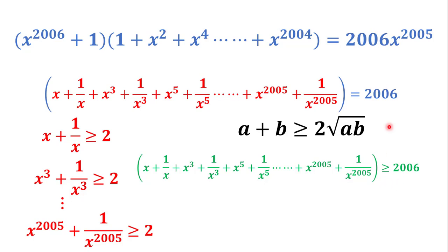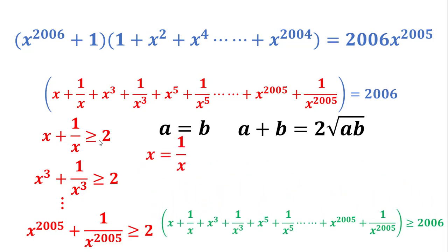We want an equal sign instead of a greater-than sign, because we are solving this equation. Going back to AM-GM: this inequality becomes equality if and only if a = b. So this inequality becomes equality if and only if x = 1/x, x^3 = 1/x^3, and so on, up to x^2005 = 1/x^2005.